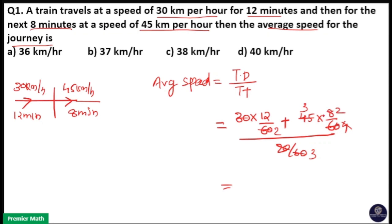So 6 plus 6, 12. And 3 will come to the numerator. That is 36 km per hour is your answer. Option A is your answer.